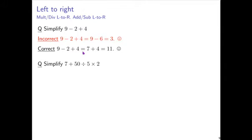Let's take a look at this: simplify 7 plus 50 divided by 5 times 2. Focus on divisions and multiplications from left to right. The addition would come after all of that, so first we do the division. Amongst divisions and multiplications, the division is on the left.